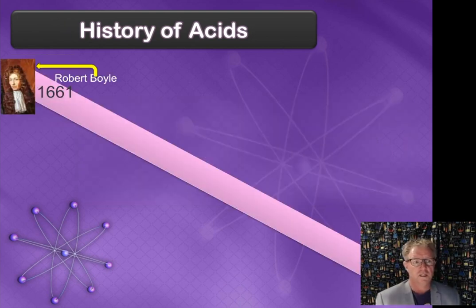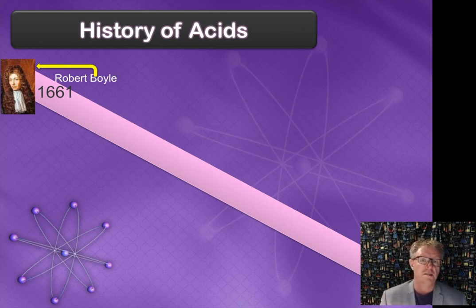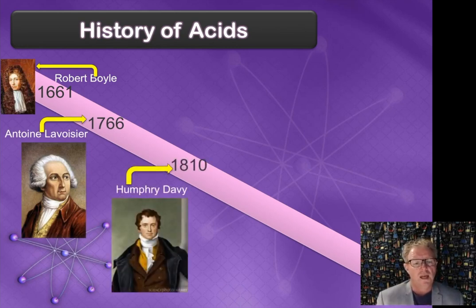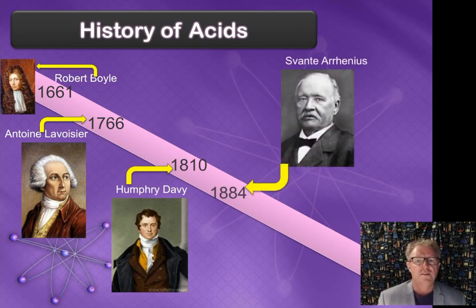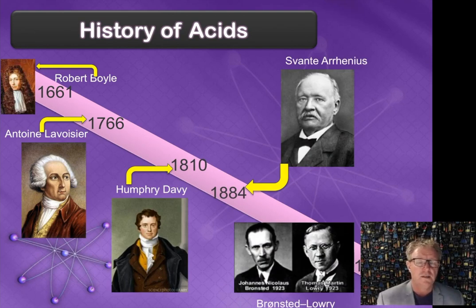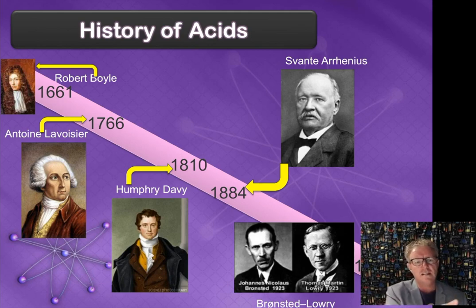Let's check out the first person we're going to be looking at — Robert Boyle back in 1661. A lot of his basic ideas of acids and bases came from experimentation. Then we have Antonio Lavoisier in 1766, Humphrey Davy in 1810, Svante Arrhenius in 1884, and Bronsted-Lowry most recently in 1923. You're not expected to know these dates, however you can see a gradual progression in the theories and our understanding of what's going on.